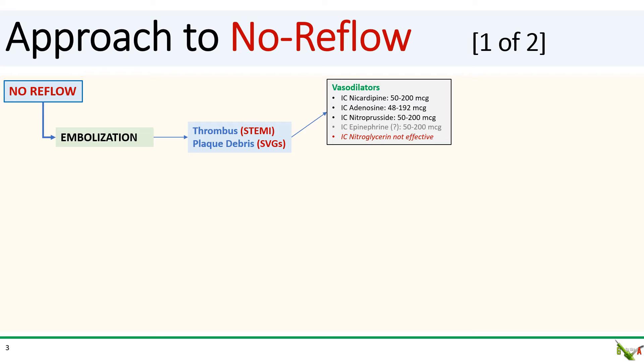I typically use IC nicardipine at boluses of 50 to 200 micrograms depending on the patient's blood pressure. The pre-administration of IC nicardipine may actually have some effect in reducing the incidence of no reflow in rotoblader and saphenous vein graft cases.